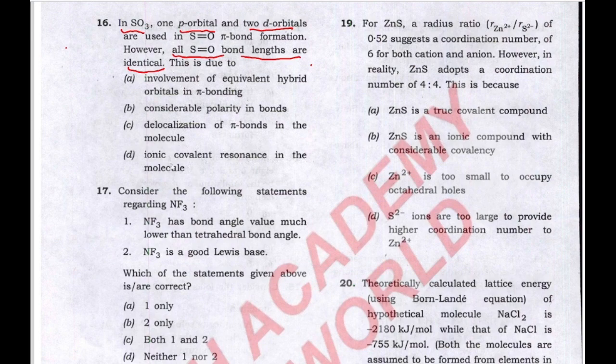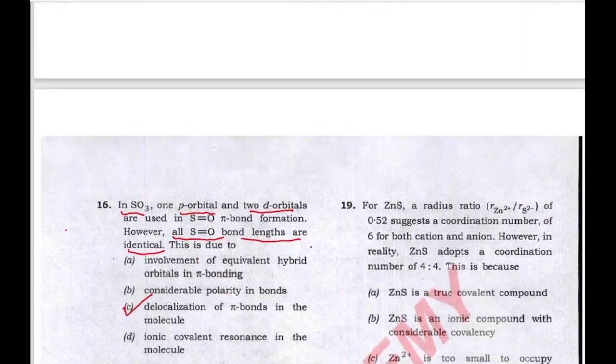The four options are: first, involvement of equivalent hybrid orbitals in pi bonding; second, considerable polarity in the bonds; third, delocalization of pi bonds in the molecule; fourth, ionic-covalent resonance in the molecule. The correct answer is C — delocalization of pi bonds in the molecule.